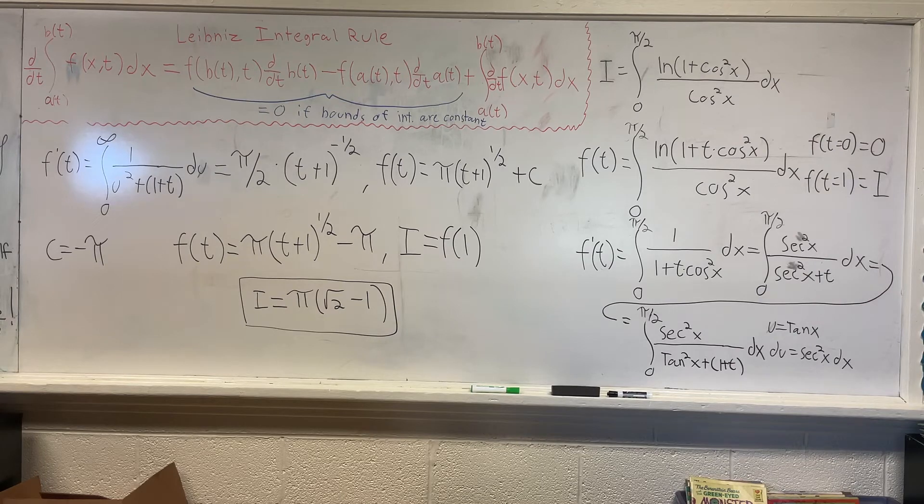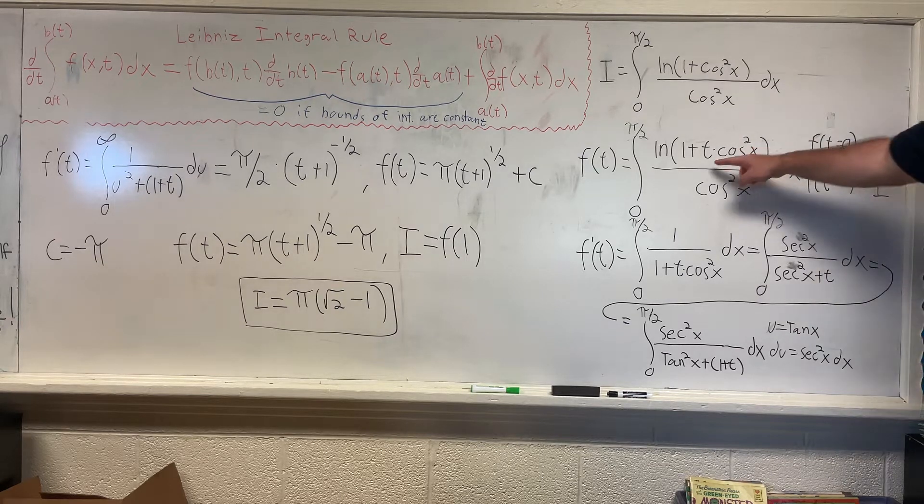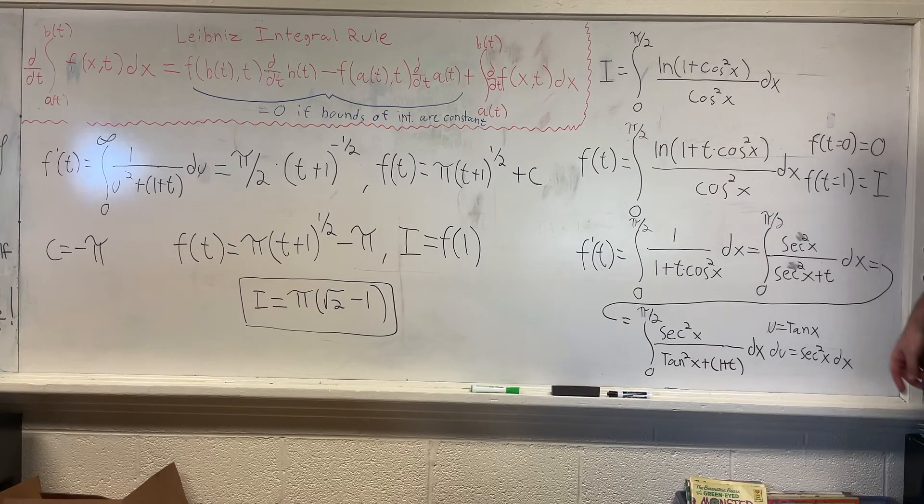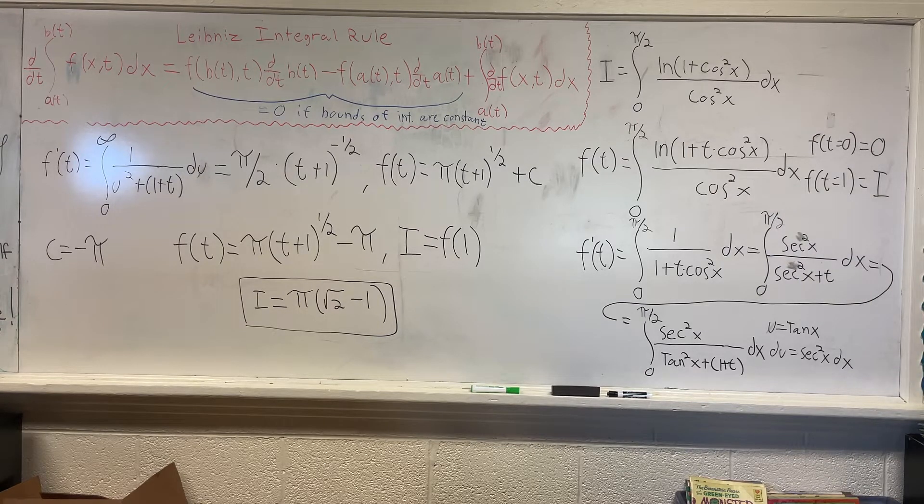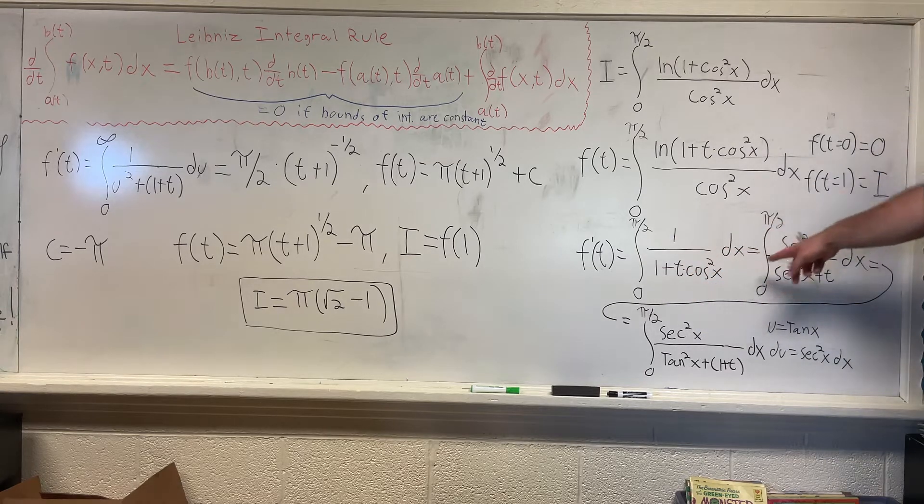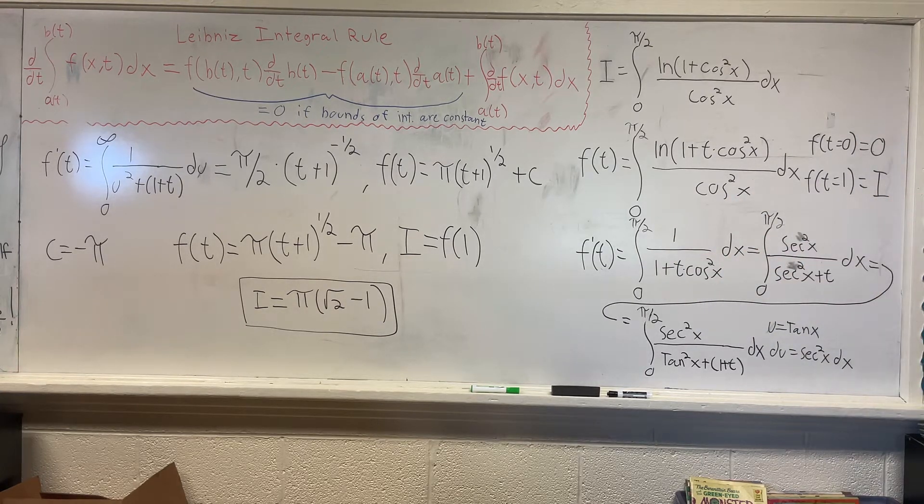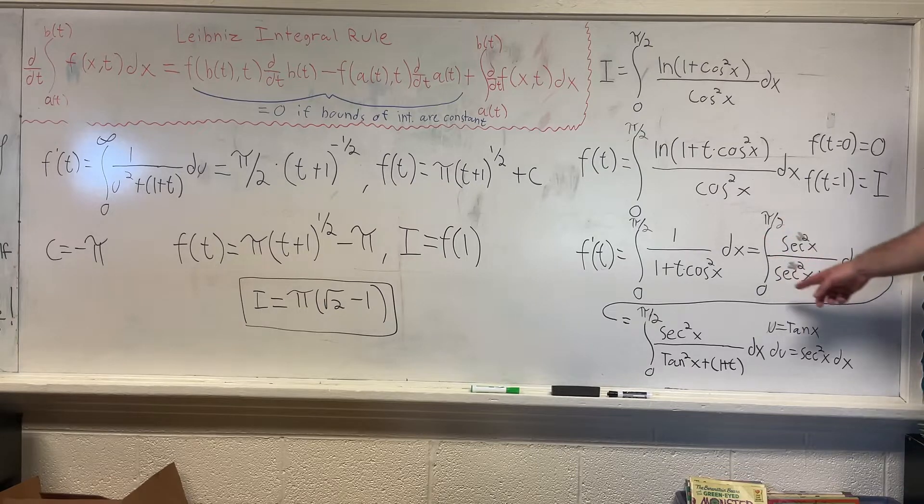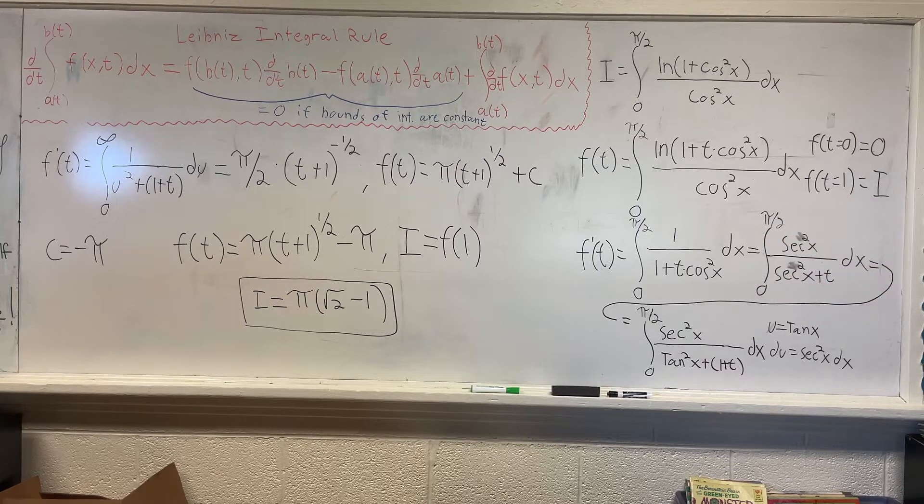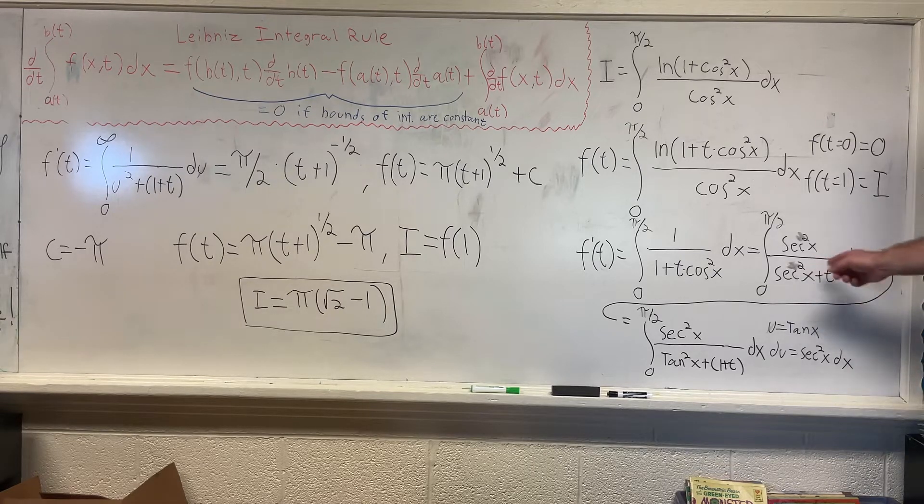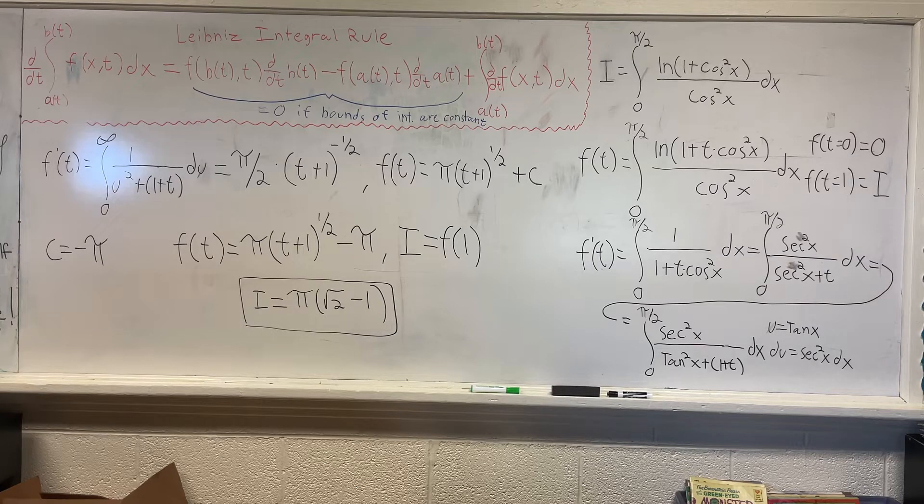So now we want to differentiate this with respect to t. And what happens if you do that is you get that f'(t) is equal to this right here. Hope you can see that. And then I rewrote it again by multiplying the top and the bottom by sec²x, and then used the fact that sec²x is equal to tan²x + 1.